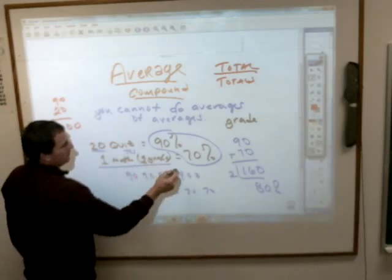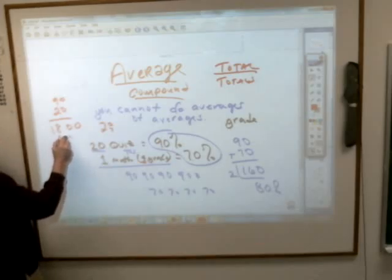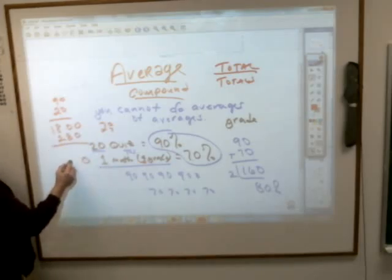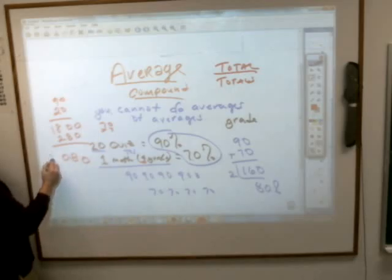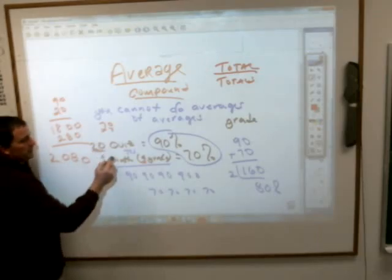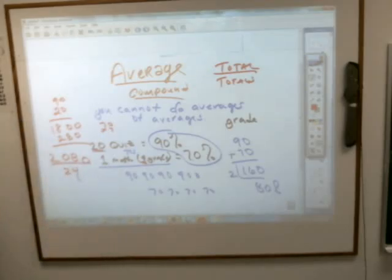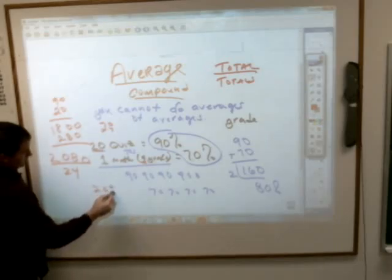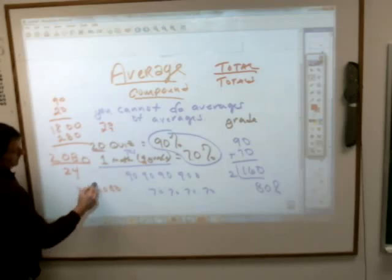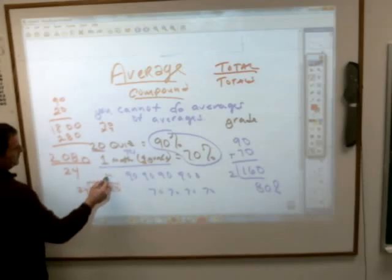If you have four math grades that are 70%, 70 times 4 is 280. Total percentage points you have before you divide everything out: 2,080. Now how many total grades would you actually have? 20 plus 4 — you divide 2,080 by 24, and that would be your actual real percentage. It's going to be a high 80 — about 86, rounding up to an 87.